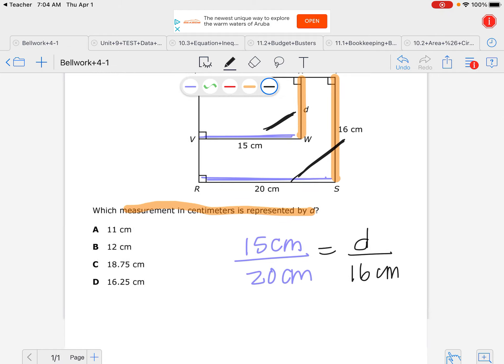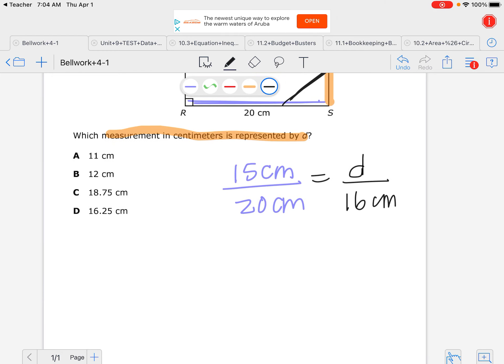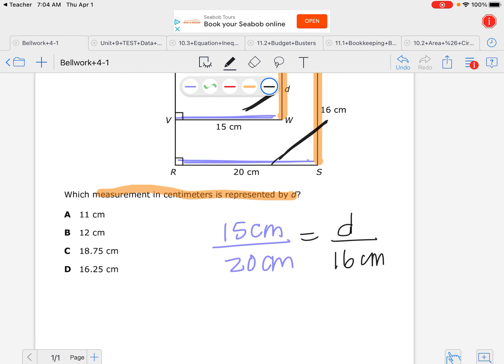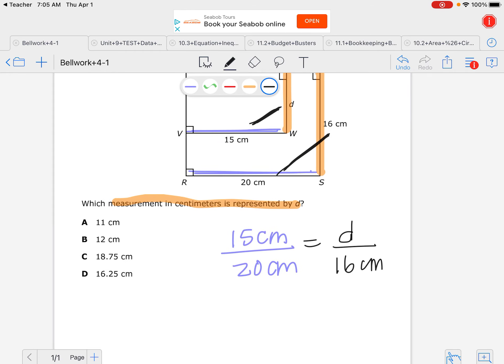Now once this is set up, I could cross multiply and divide. Also notice this: the bottom number is smaller than the top number. The sideways number, 20, is smaller than 16. So that tells me that when I get ready to do these two, my number that's missing needs to be smaller than 15. Well, that automatically crosses out these two numbers because proportionally, I want them to be the same.